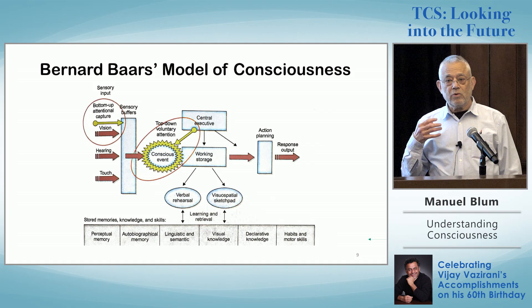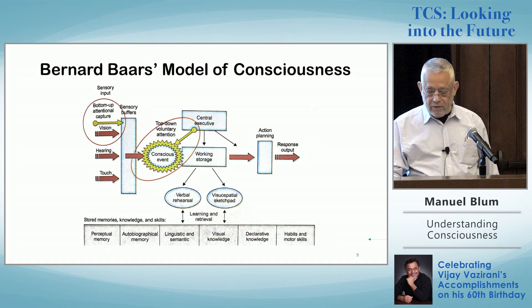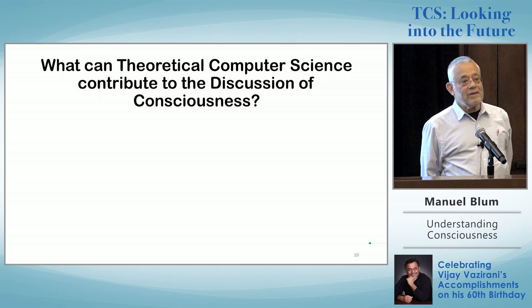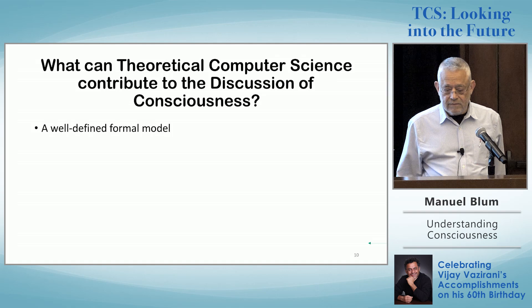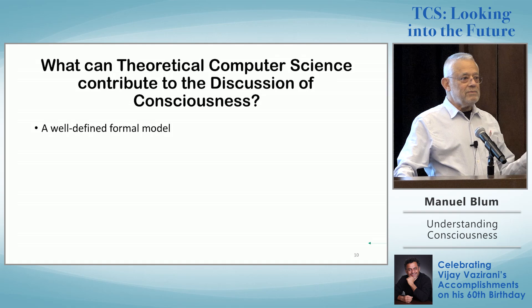What Lenore and I are doing is formalizing this model that the neuroscientists have come up with, and then coming up with definitions of consciousness, agony, and so on. So here's a question: what can theoretical computer science contribute to the discussion of consciousness? I'm hoping: a well-defined formal model. I would like to take Baars' model and really make it formal. We are good at defining things like that, so we might be able to do that. I would like good definitions of consciousness.